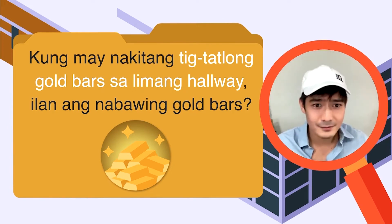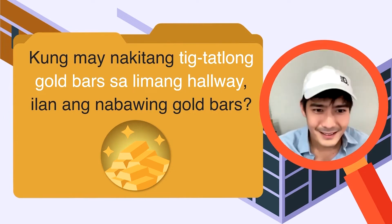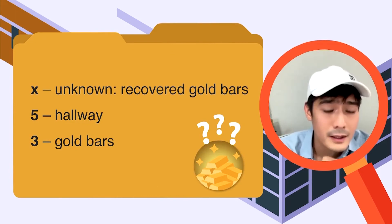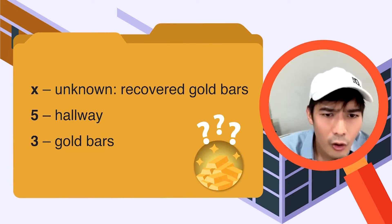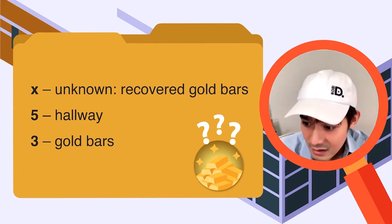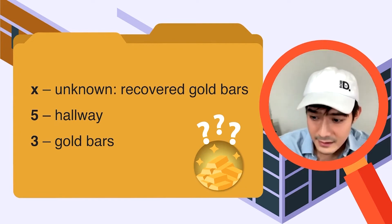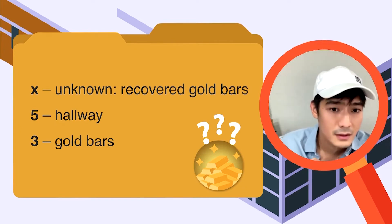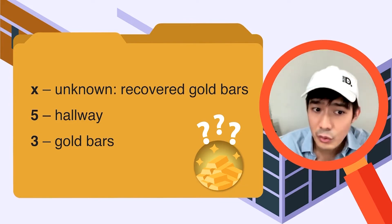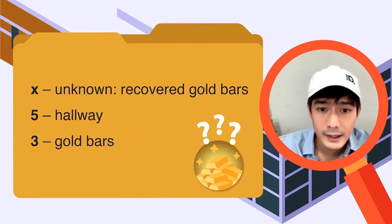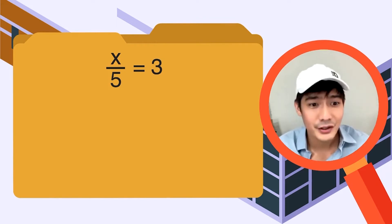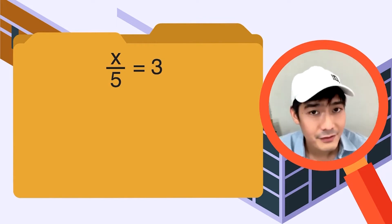Buwin muna natin yung equation natin. Let's assign x para dun sa hinaharap natin — for the unknown — o yung bilang ng nabawing gold bars. Dahil limang hallway ang nakitaan ng gold bars, pwede natin itong isulat na x over 5. X is the unknown, 5 hallways, tatlong gold bars. X over 5 — dahil sa kabilang side ng equation naman ilalagay natin ang 3, dahil ito yung bilang ng nakitang gold bars sa bawat hallway. So: x over 5 equals 3.